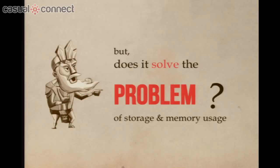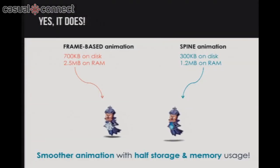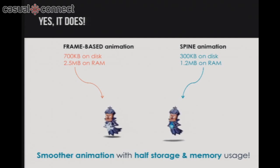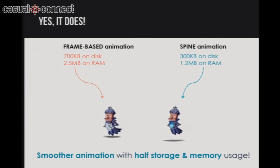But the question remains — does it really solve the problem of disk storage and memory usage? Fortunately, it does. We managed to reduce disk and RAM usage by half. And more than that, we managed to get much better animation. On your left is the character with frame-based animation, and on your right is the Spine animation. Much better animation with half the storage and memory usage.